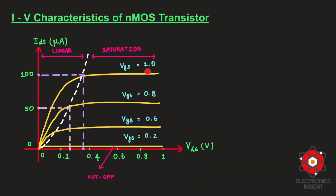Here is the IV characteristics of the NMOS transistor — a plot between the applied drain-to-source voltage and the obtained drain-to-source current for various gate-to-source voltages. We can see three different regions of operation. The cutoff region occurs when the applied gate-to-source voltage is much less than the threshold voltage — the minimum gate voltage requirement — so IDS current is zero. When VGS increases and VDS is less than VGS minus VT, there is a linear relationship between VDS and IDS, as discussed in previous videos.